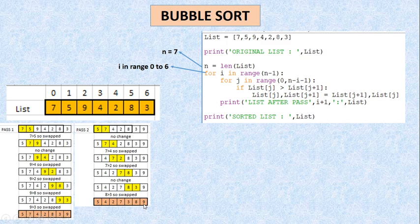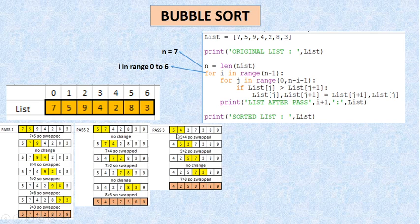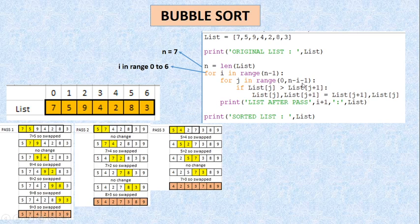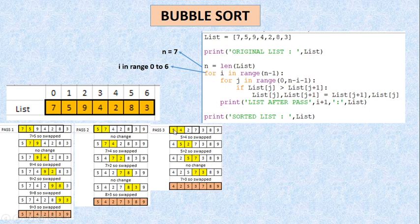Pass 3 देख लेते हैं। I की value हो गई 2, तो j loop चलेगा 0 से n-2-1 मतलब n-3 तक, 7-3=4, ending value 4 मतलब index 0 से 3 तक। तो 5, 4, 2, 7 इन elements के लिए loop चलेगा। 5 और 4 को compare किया — 5 बड़ा, swapping हो गई। फिर 5 और 2 को compare — 5 पीछे। फिर 5 और 7 को compare — no change। फिर 7 और 3 को compare — 7 पीछे। And at the end of pass 3 I get: 4, 2, 5, 3, 7, 8, 9.